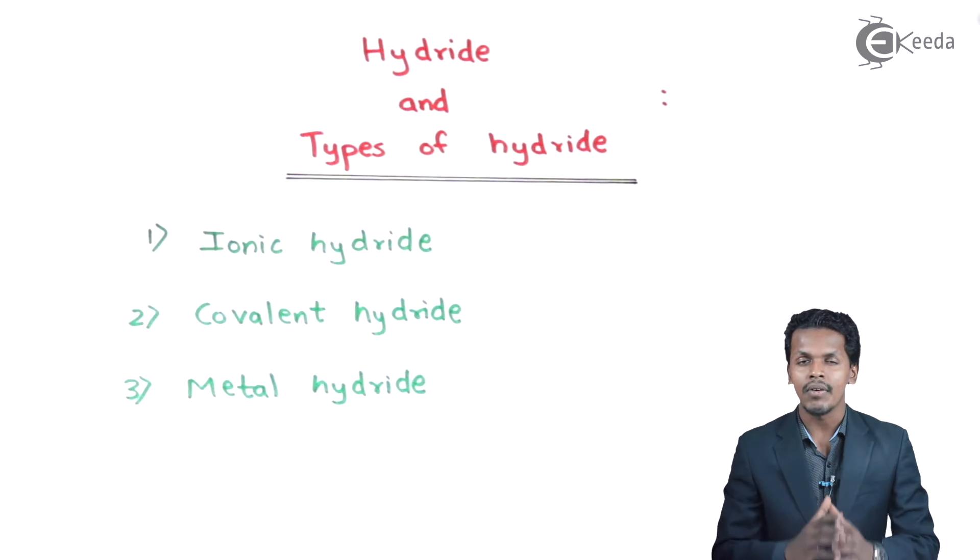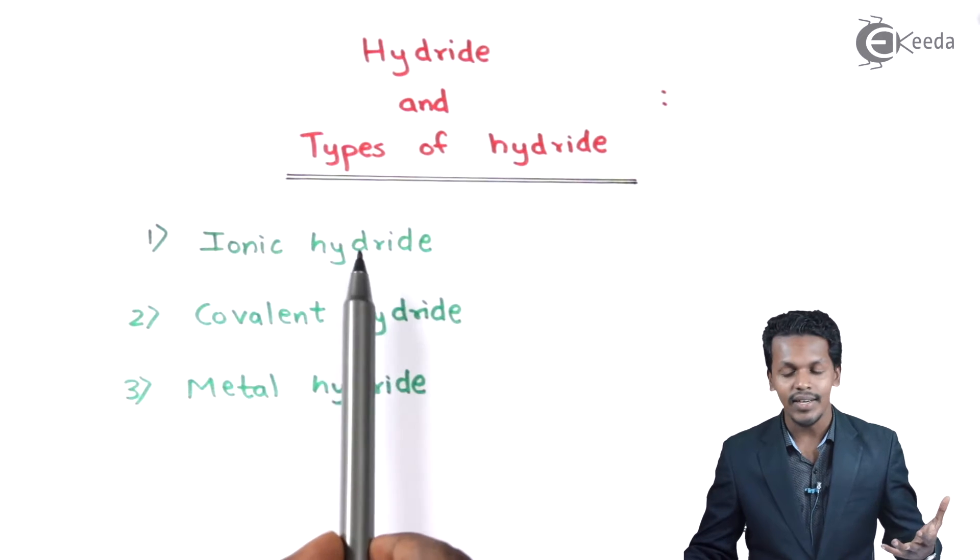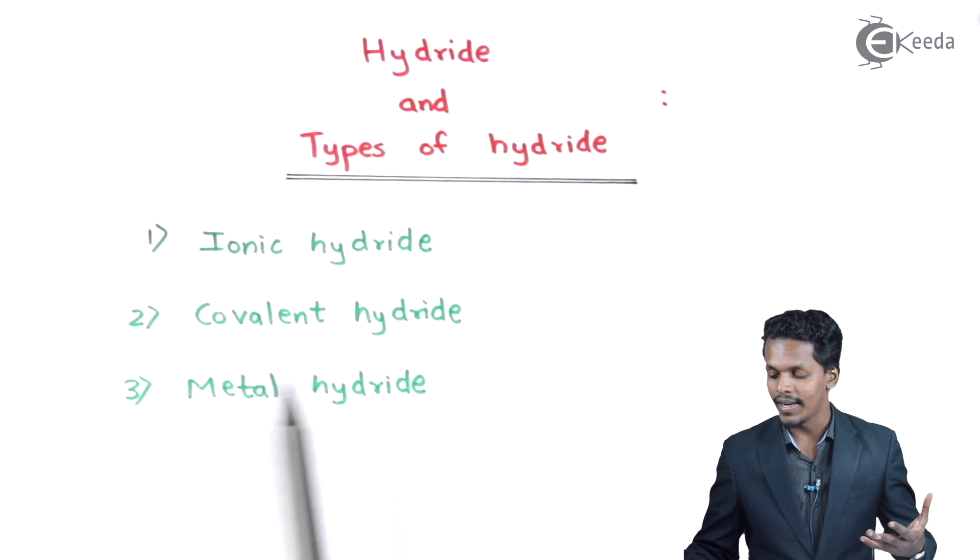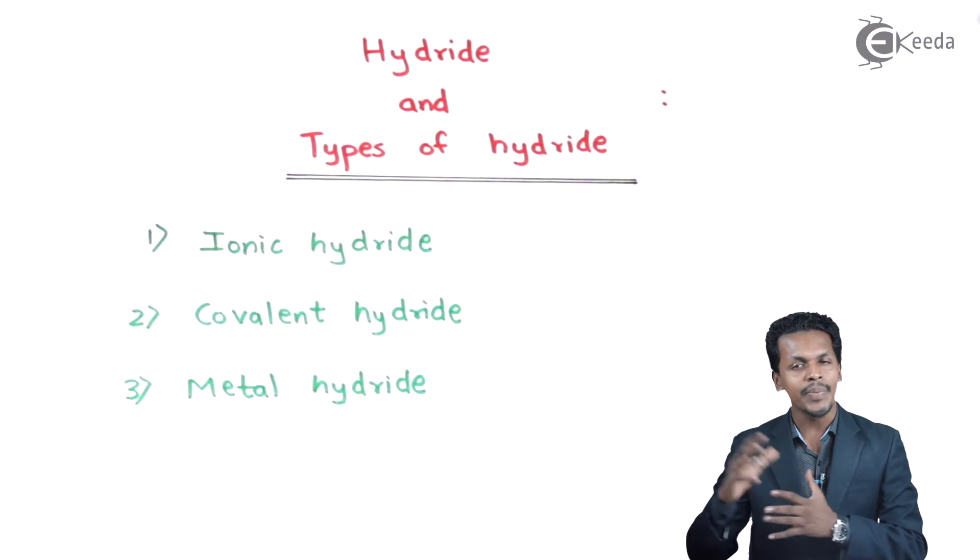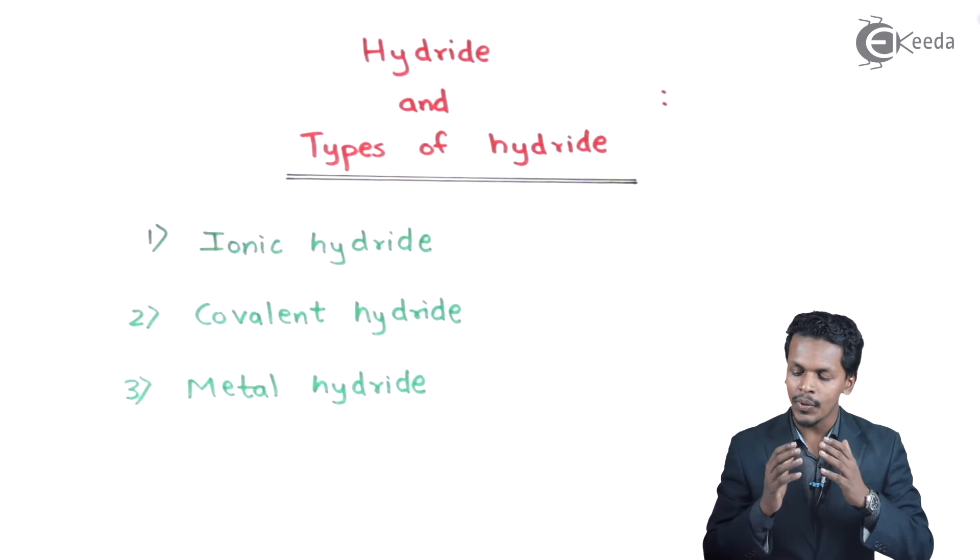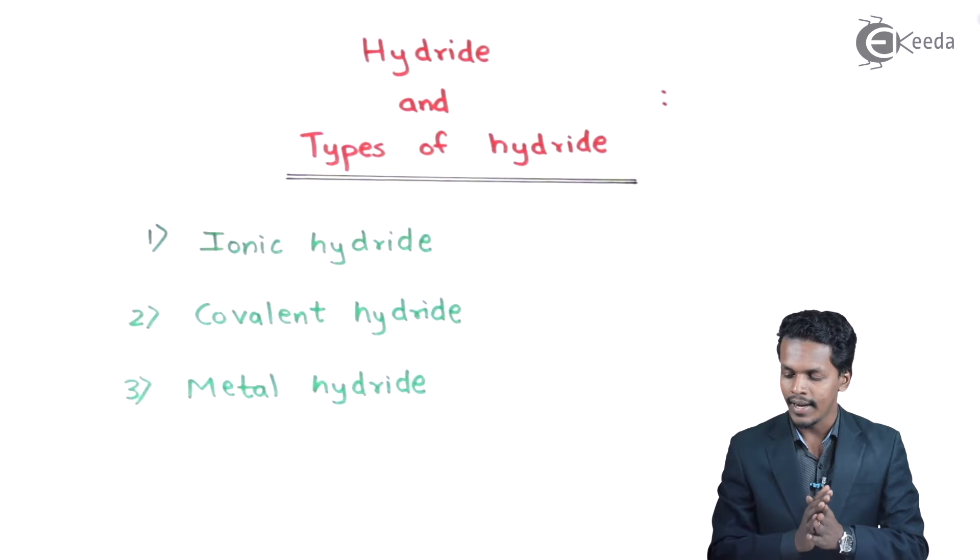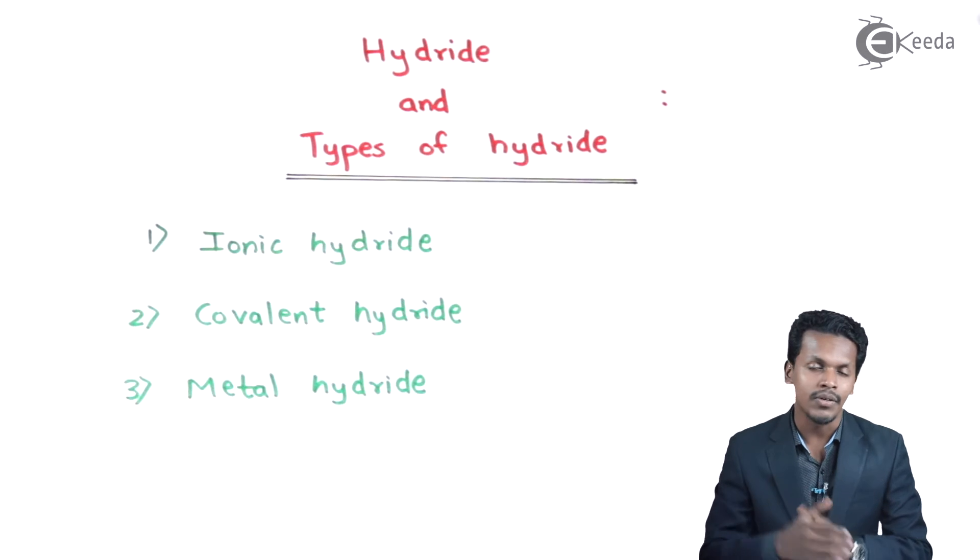There are basically three types of hydrides: ionic hydride, covalent hydride, and metal hydride. There will be a separate lecture in which I am going to discuss ionic hydride, covalent hydride, and metal hydride in detail. For now, I have just mentioned the types of hydride.